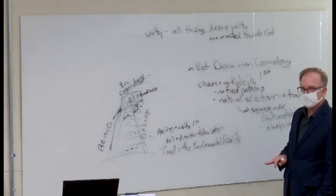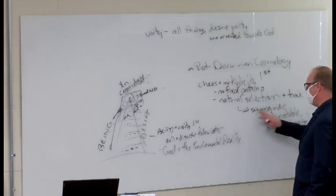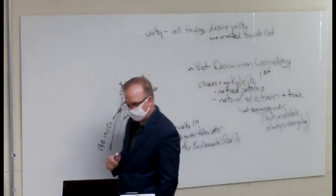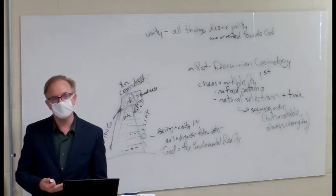So here, chaos and multiplicity is primary. It's the order and even the semblance of order that is secondary. There is no divine intelligence that has ordered things and that sort of draws things back to itself.